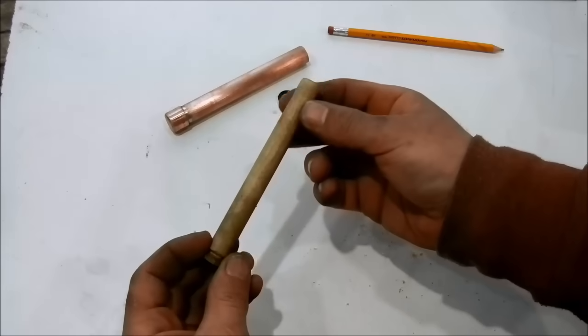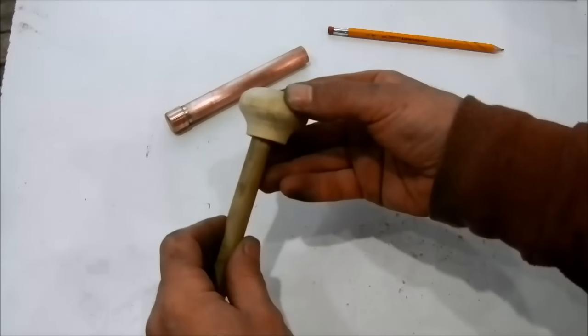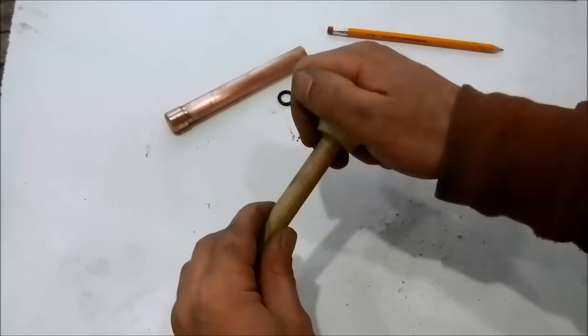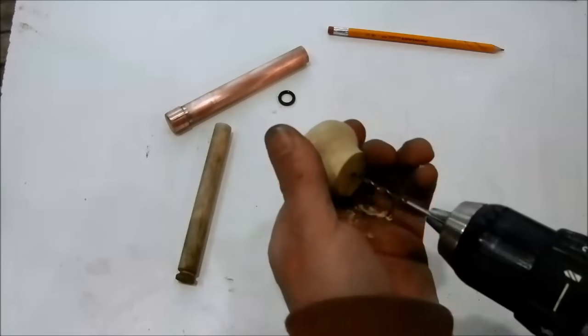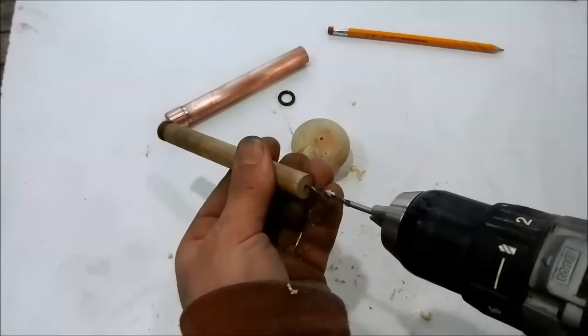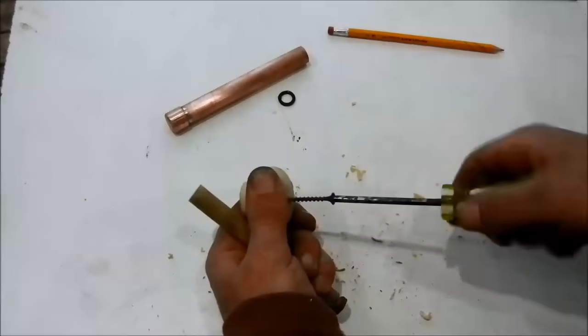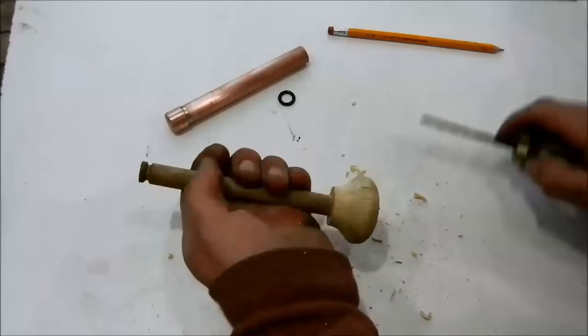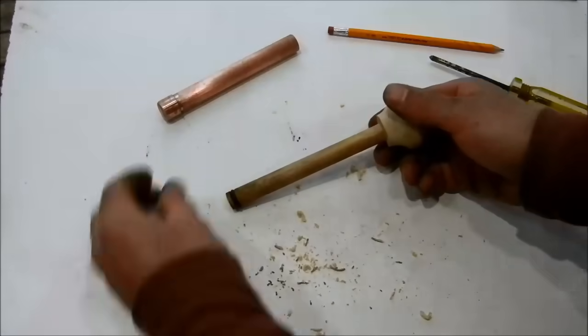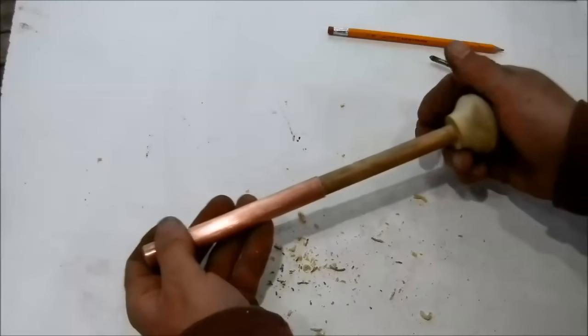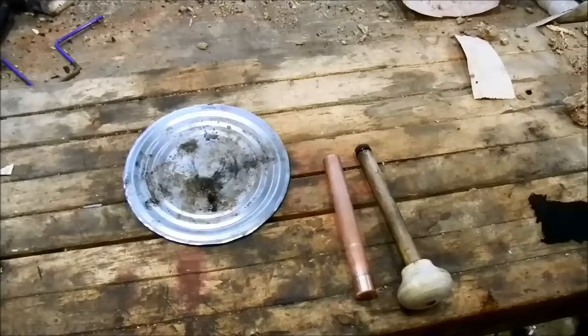Now that we have the piston cut to length we are going to attach this knob that I turned on the lathe. You could also use a drawer knob or some other round thing. It makes it easier to hold and shove it through your hand.